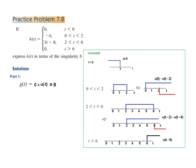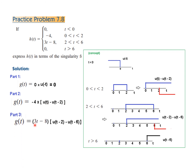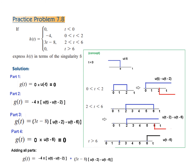Part 1: 0 multiplied by u(-t) equals 0. Part 2: -4 multiplied by the gate function for 0 to 2, which is u(t) - u(t-2). Part 3: (3t - 8) multiplied by the gate value for 2 to 6, which is u(t-2) - u(t-6). Adding all parts gives the combined expression.